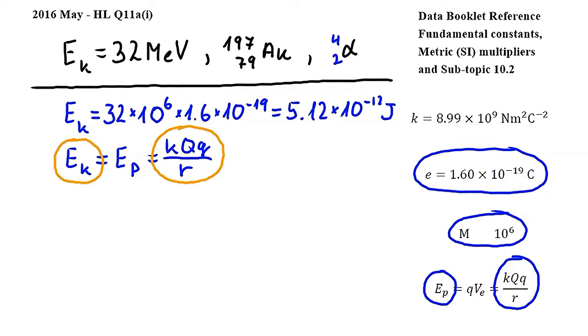Focusing on these two parts of our equation, we can rearrange for r, so multiply by r and divide by eK, which gives us r is equal to k capital Q lowercase q over eK.